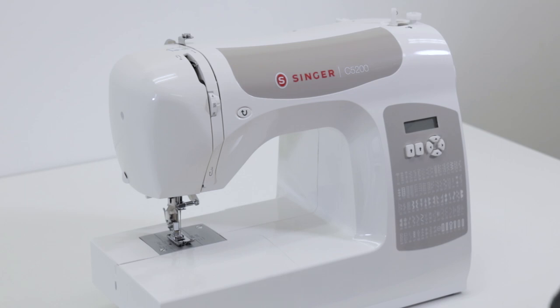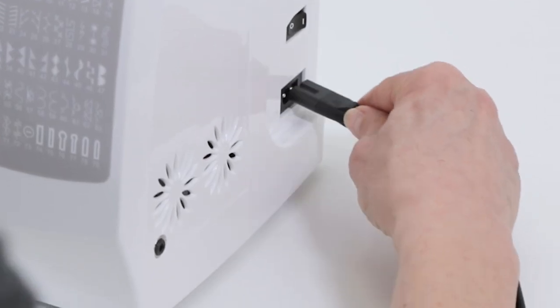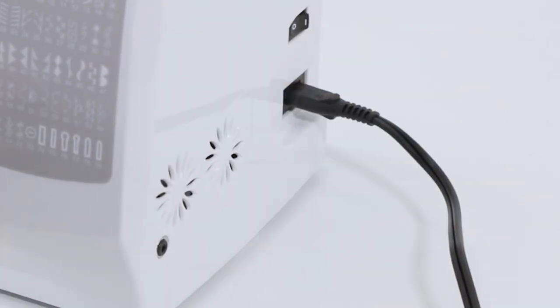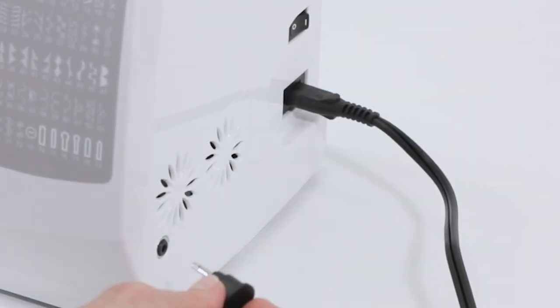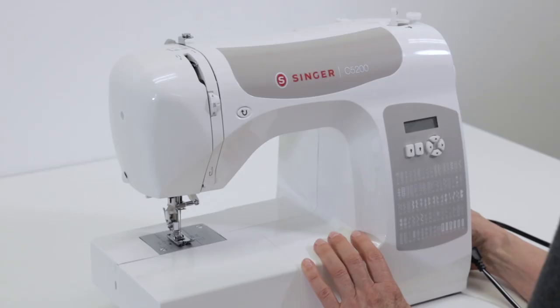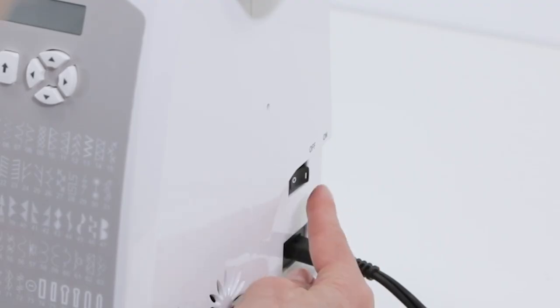Let's take a look at some of the main parts of the machine before we thread it. Over here is where you'll plug in the power cord, and here is where you'll plug in the foot control. You'll turn the machine on with this switch.